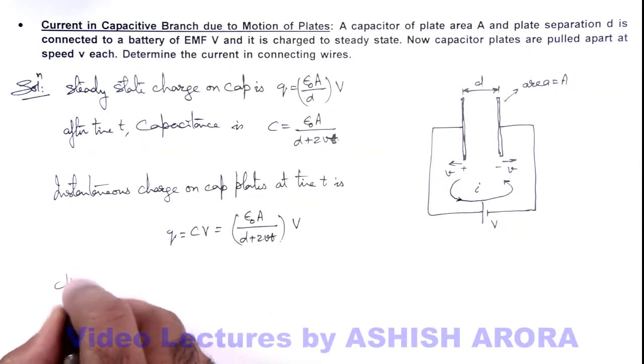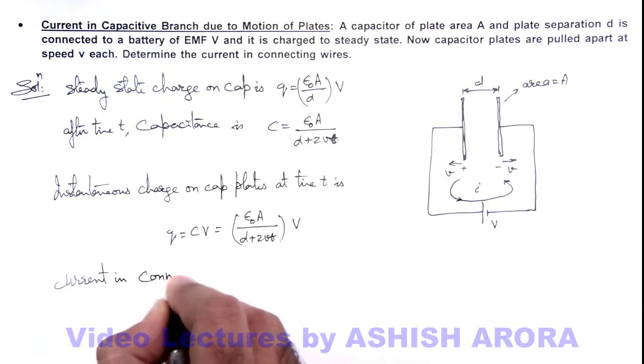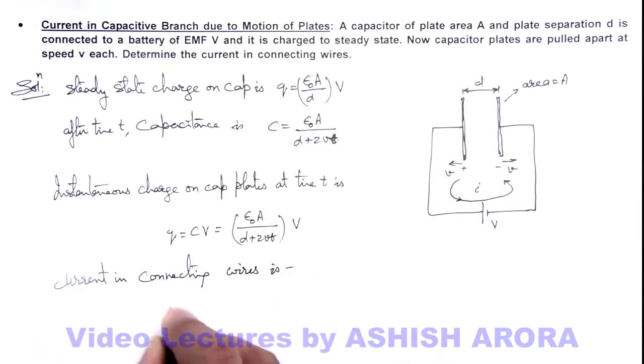So here we can write current in connecting wires is - this current can be given as dq/dt.